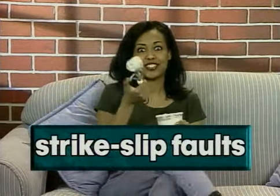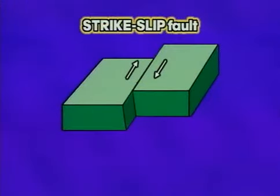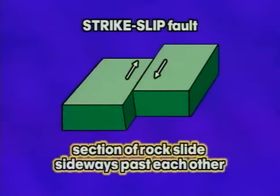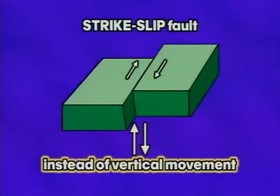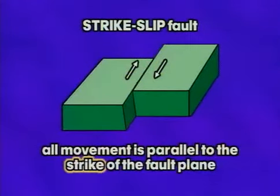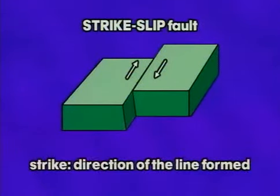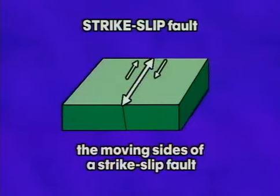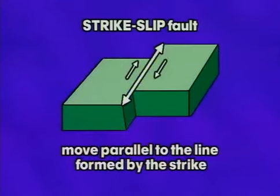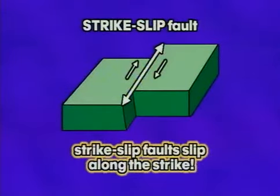In a strike-slip fault, the sections of rock slide sideways past each other — we're talking about lateral movement instead of vertical movement. All movement in a strike-slip fault is parallel to the strike of the fault plane. Remember, the strike is the direction of the line formed where the fault plane meets a horizontal plane. The moving sides of a strike-slip fault move parallel to the line formed by the strike.